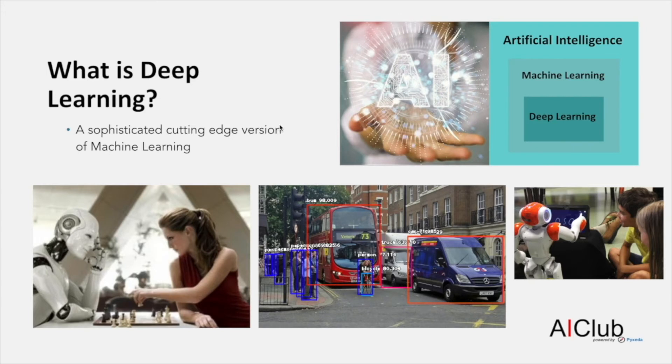Another really important term that you'll come across when you learn about AI is deep learning. You can think about deep learning as a really sophisticated form of AI that has a complex architecture. It takes a long time to learn patterns, but after it learns them, it's really good at recognizing them. It's used a lot for image recognition. We cover this topic in detail in some of the advanced sessions.